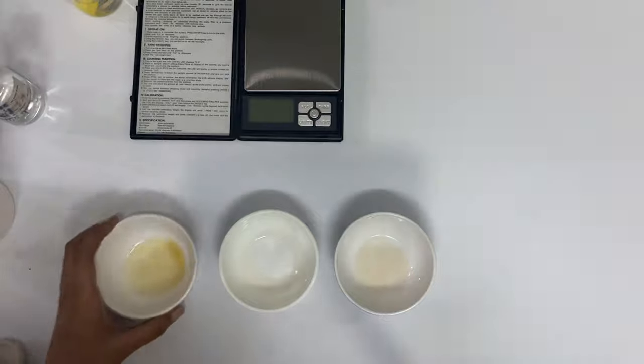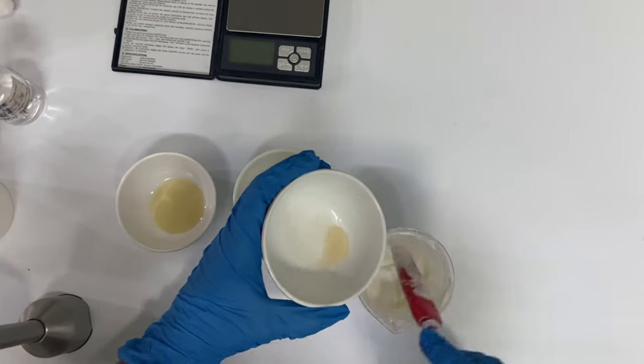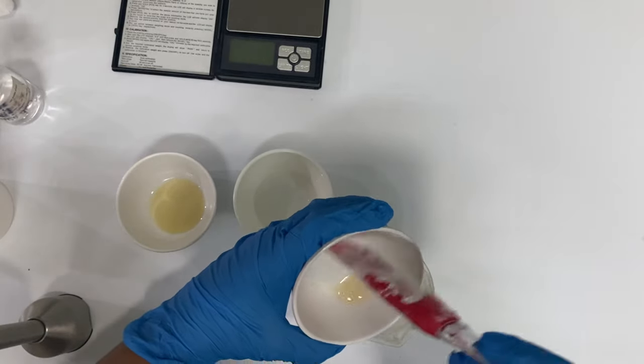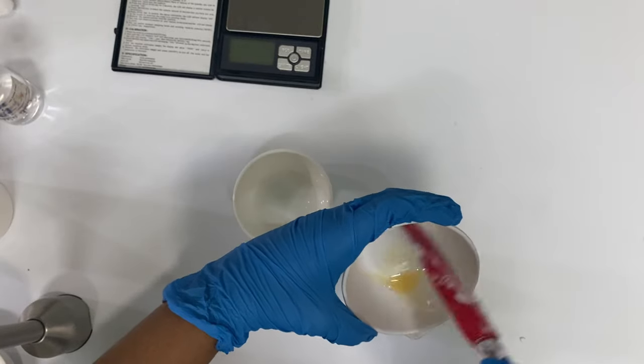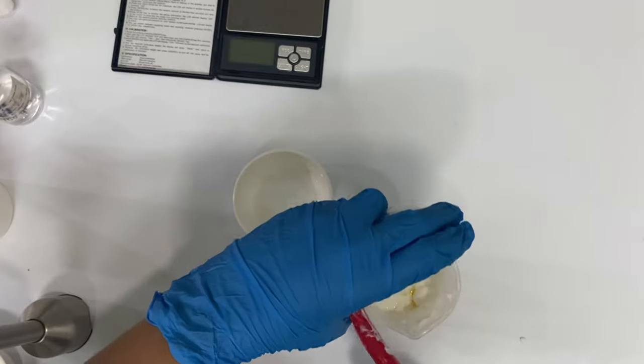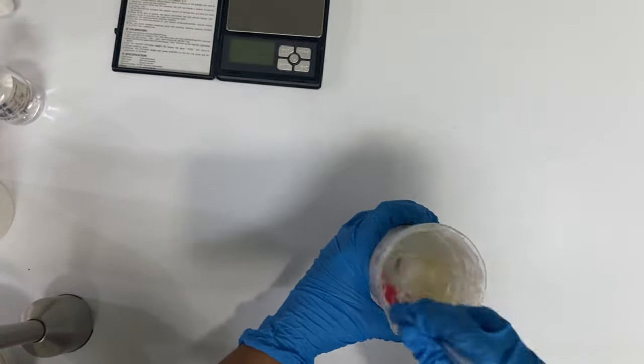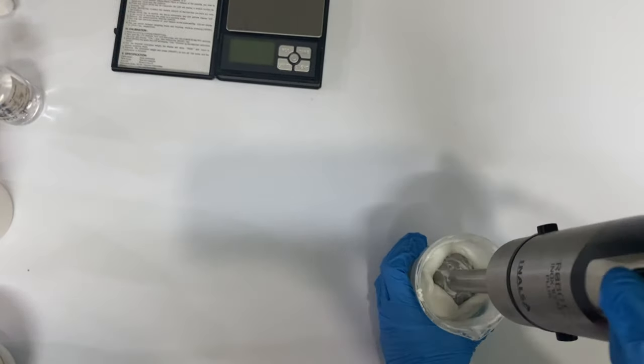These are the cool down phase ingredients. Now we'll add the cool down phase ingredients in this cream and mix it. We can blend it if we want again. This is the fragrance oil. Now I'm blending it again using the immersion blender.